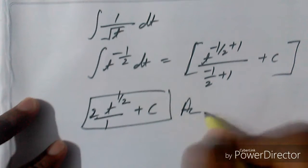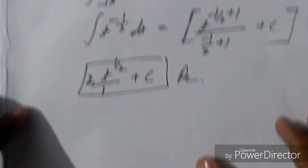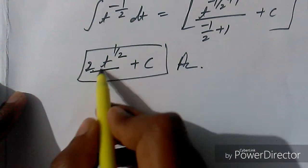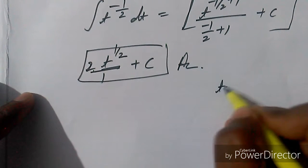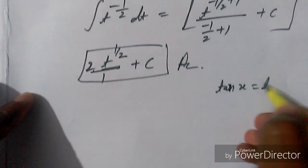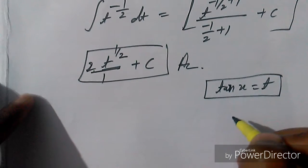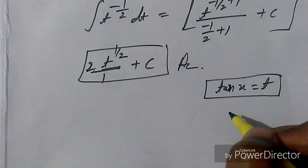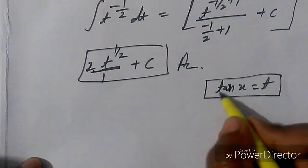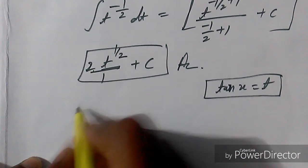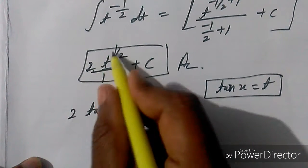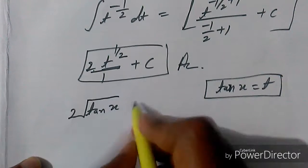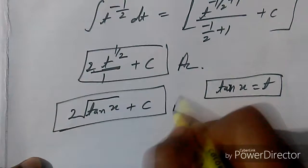Now we back-substitute the value of t. Since we supposed tan(x) equals t in the beginning, we put this back to get the final answer: 2 times the square root of tan(x) plus C.